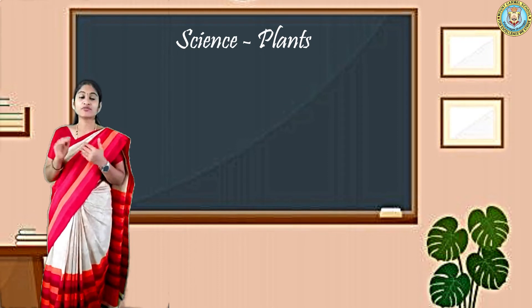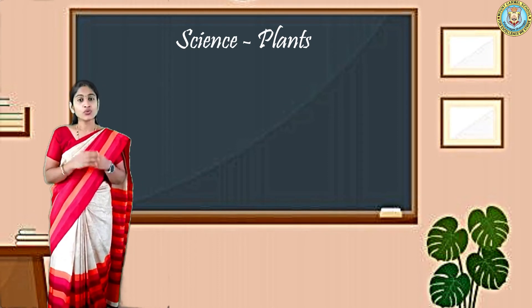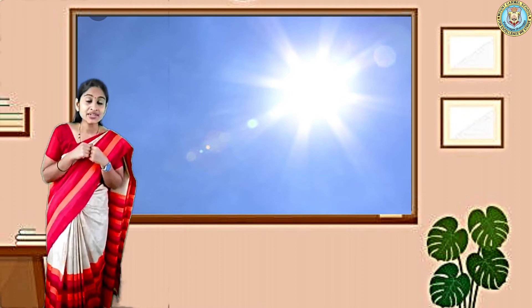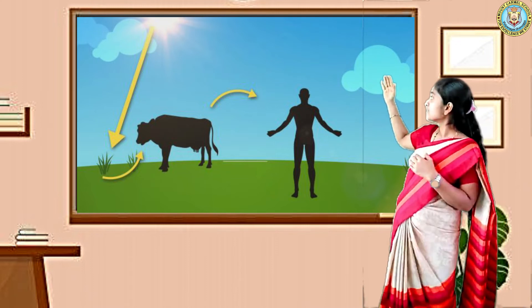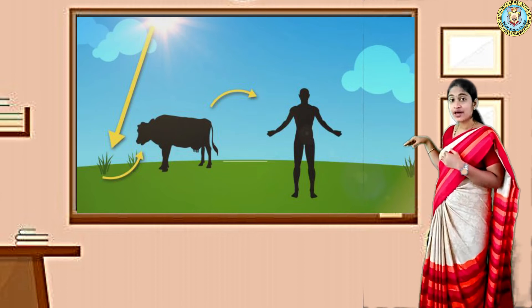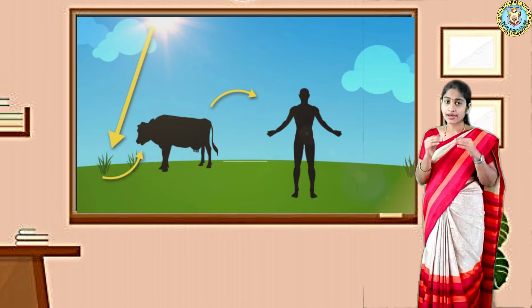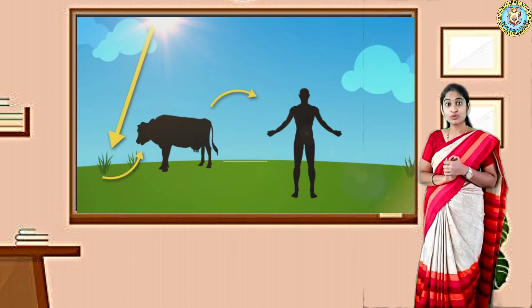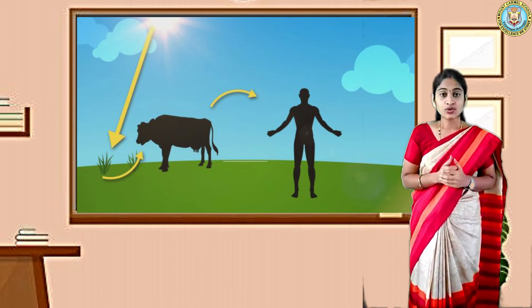Now let us move on to the next concept of our lesson — energy flow. We eat food and by eating food we get energy. Can we eat sunlight? No. But we can get energy from sunlight. The sunlight falls and the grass prepares food for the entire plant. The grass is eaten by a cow, and then the products from the cow — that is milk, butter, ghee — are eaten by human beings. So this is the energy flow from sunlight to human beings.